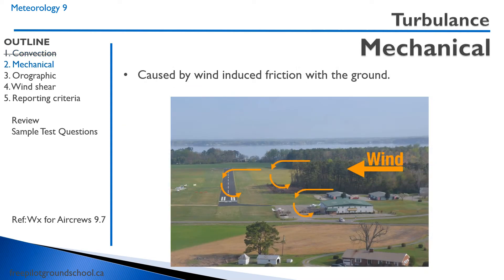We can have mechanical turbulence caused by wind-induced friction with the ground. Looking at this aerodrome diagram, we have the runway and a wind coming from the right, crossing over trees, creating friction and eddies. You can end up with considerable turbulence when you're below the height of the trees — which is exactly when you have the least tolerance for turbulence. So be aware landing with trees or other obstructions and a crosswind: you may get not only the crosswind but also turbulence near the height of the trees or buildings.